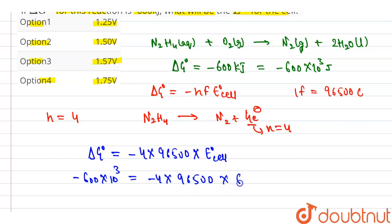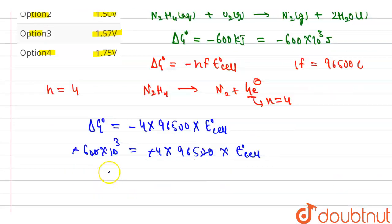The minus signs cancel out and two zeros cancel out. Now E0 cell equals 6 times 10 to the power 3 divided by 4 times 965. Solving, we get approximately 1.55 volts, which is approximately equal to 1.57 volts.